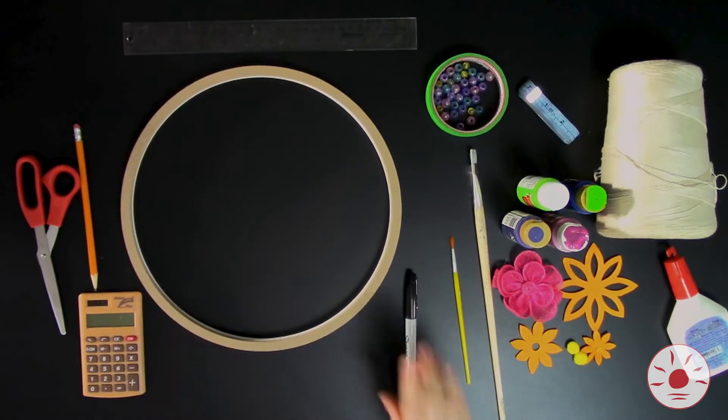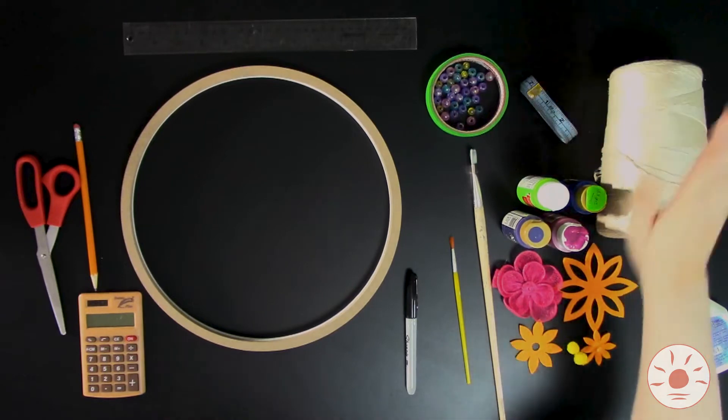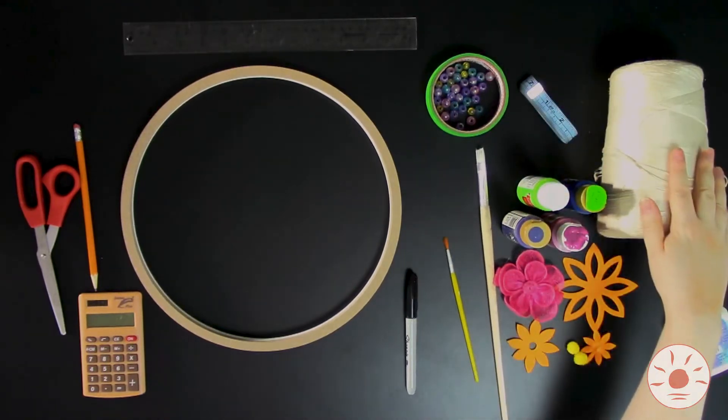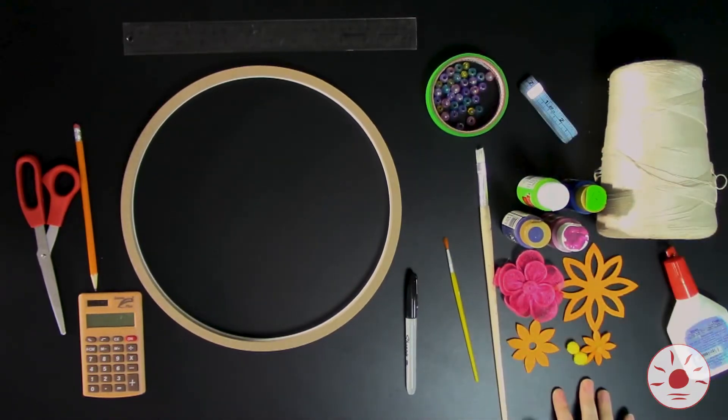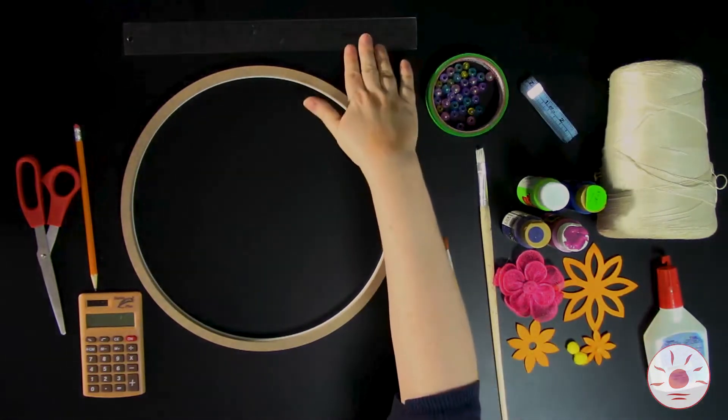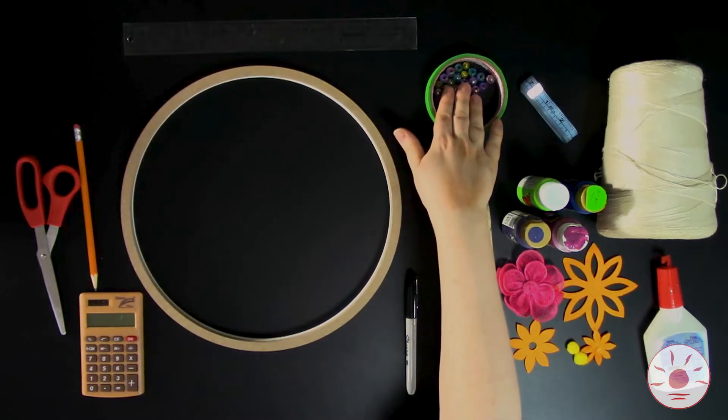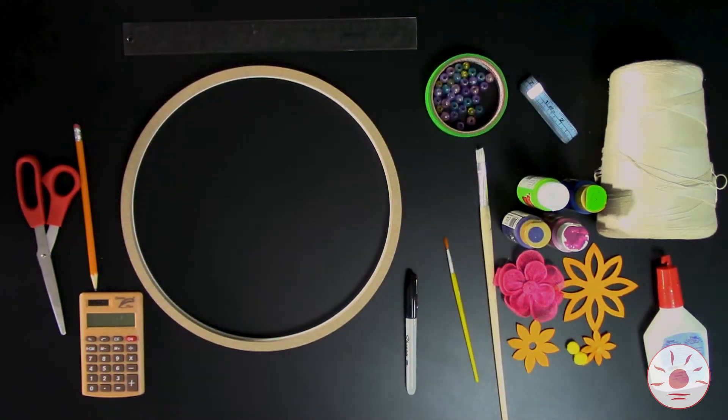You'll also need a marker, a measuring tape, paint and paint brushes, string, and anything you'd like to decorate your hoop with, like flowers, foam shapes, pom-poms, stickers, and so on. You'll also need glue, a ruler, and you may want a calculator, some painter's tape, and some beads to decorate your project with. Finally, you'll need a pencil and a pair of scissors.